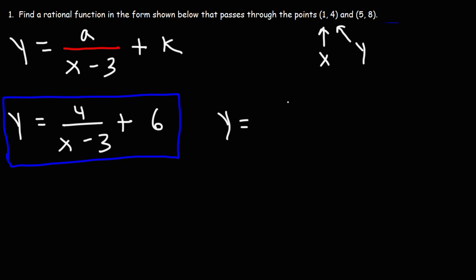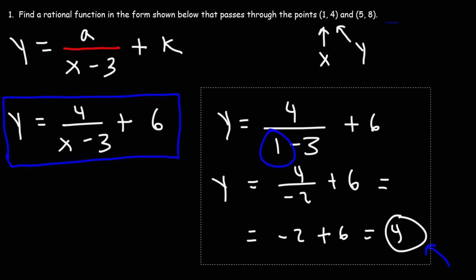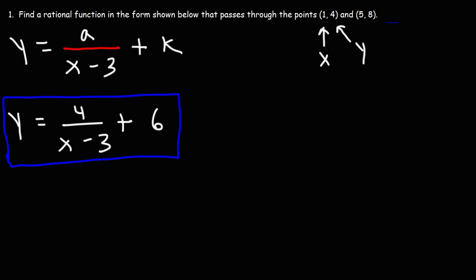So y equals 4 over 1 minus 3 plus 6. 1 minus 3 is negative 2. 4 divided by negative 2 is negative 2. Negative 2 plus 6 is 4. So we can see that when we plug in an x value of 1, we get a y value of 4. So that's good.